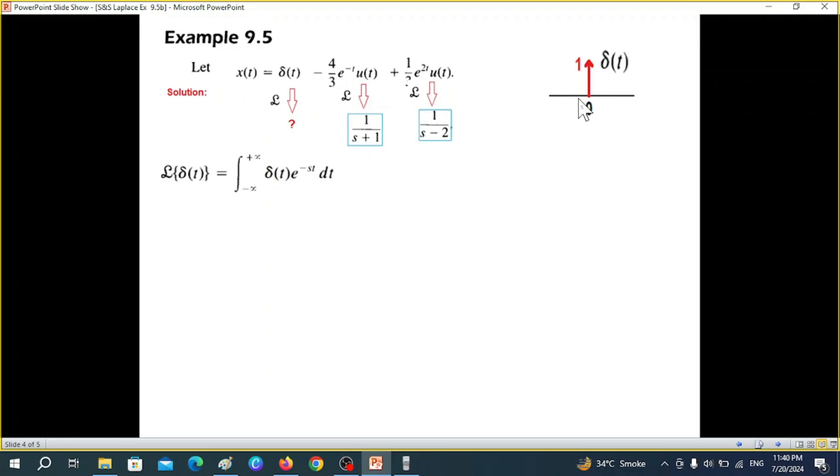So that means we can take delta t as one and since it is zero at all other places, therefore our limit will be only zero to zero. So zero to zero value is one, e to the power minus s and t is zero. So this will become one so the net value will be one.